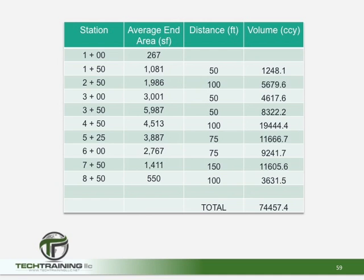Looking at the stations on the left-hand side: station 1 has an average end area of 267 square feet, and station 1+50 has an average end area of 1,081 square feet. The distance between the two stations is 50 feet based on the station 100 numbering system. Using our calculation — (267 + 1,081) / 2 × 50 / 27 — we should come up to 1,248.1 cubic yards.